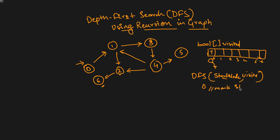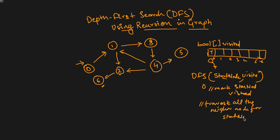Once we mark the start node as visited, we then traverse all the neighbor nodes from the start node. So we mark this node as visited and then traverse all the neighbor nodes from the start node. We do this by making a recursive call. From zero we can go to one and also to two, so we make a recursive call and visit node one.